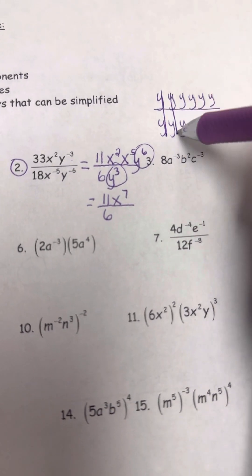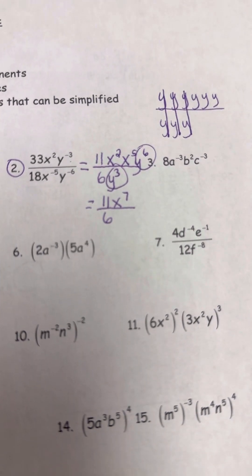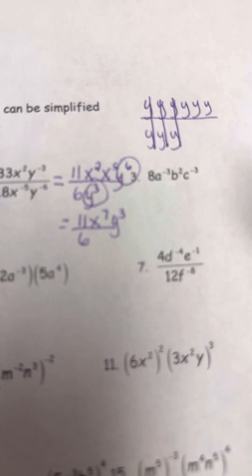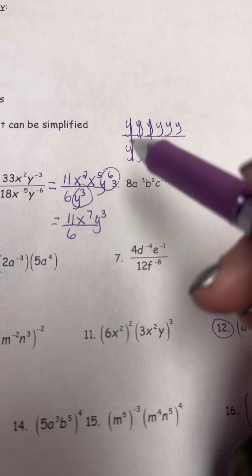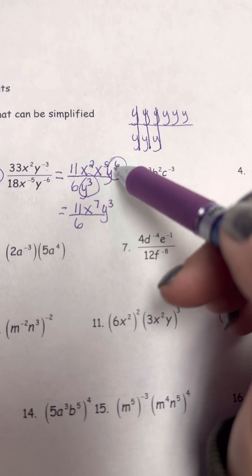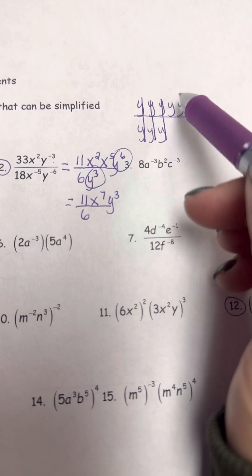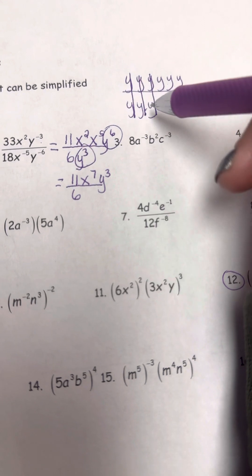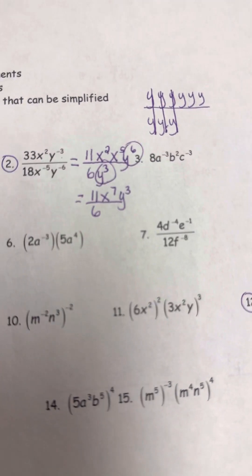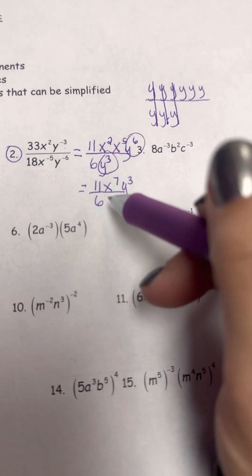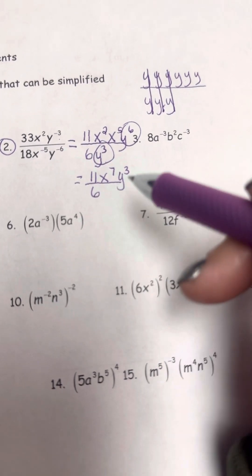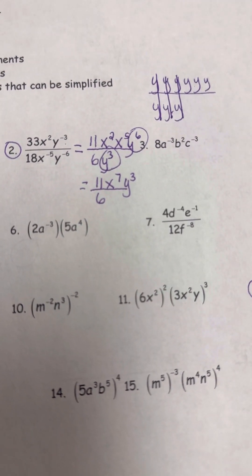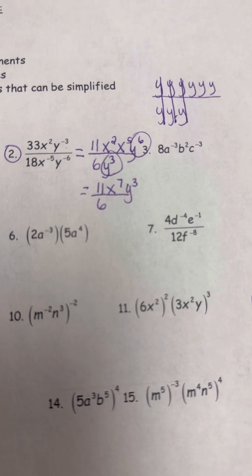Those y's cancel, leaving three y's in the numerator. Think of it as subtracting: six y's in the numerator minus three in the denominator leaves three in the numerator. Now I know I'm done: 11 over 6 can't be reduced, there are no parentheses, no negative exponents, and no repeated bases.